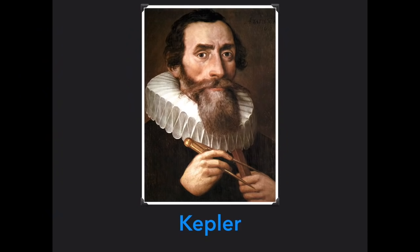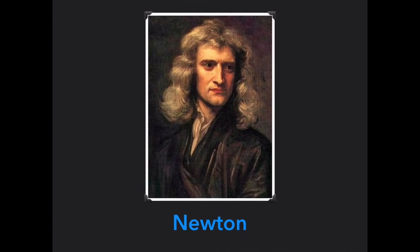Instead of orbiting in perfect circles as suggested by the geocentric model and then also put together by Copernicus, Kepler concluded that the orbits were ellipses, or oval-shaped.